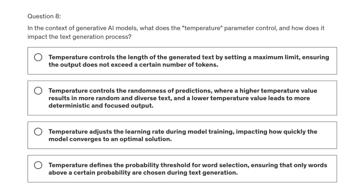Option B: temperature controls the randomness of predictions, where a higher temperature value results in more random and diverse text, and a lower temperature value leads to more deterministic and focused output. Option C: temperature adjusts the learning rate during model training, impacting how quickly the model converges to an optimal solution.